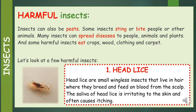Harmful insects. Insects can also be pests. Some insects sting or bite people or other animals. Many insects can spread diseases to people, animals and plants. And some harmful insects eat crops, wood, clothing and carpet. Let's look at a few harmful insects.